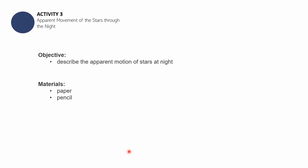So for activity number three, Apparent Movement of the Stars Through the Night, you need to do this later or maybe only when it's 7pm. The objective of this activity is for you to be able to describe the apparent motion of stars at night. You have the following materials: paper and pencil or your science notebook if you are one of my students currently.